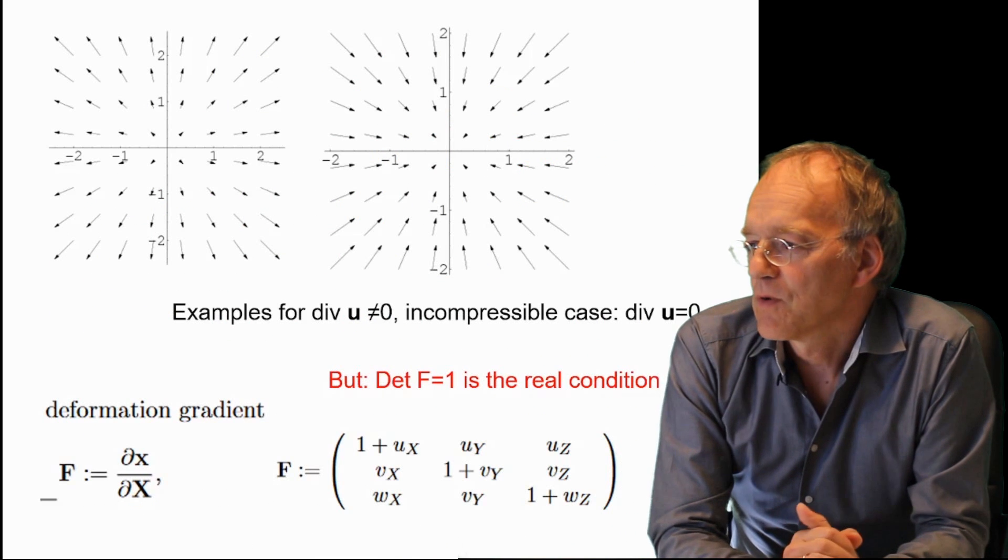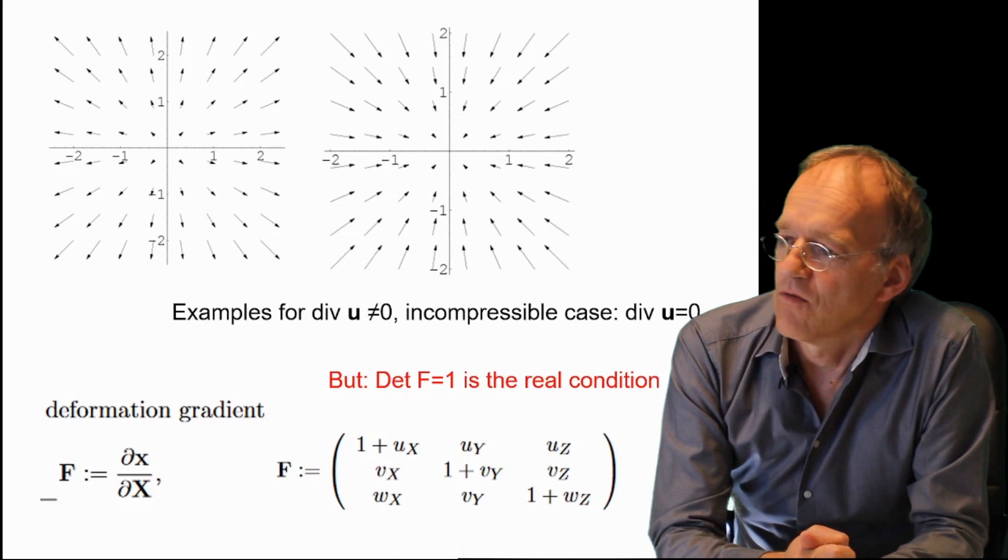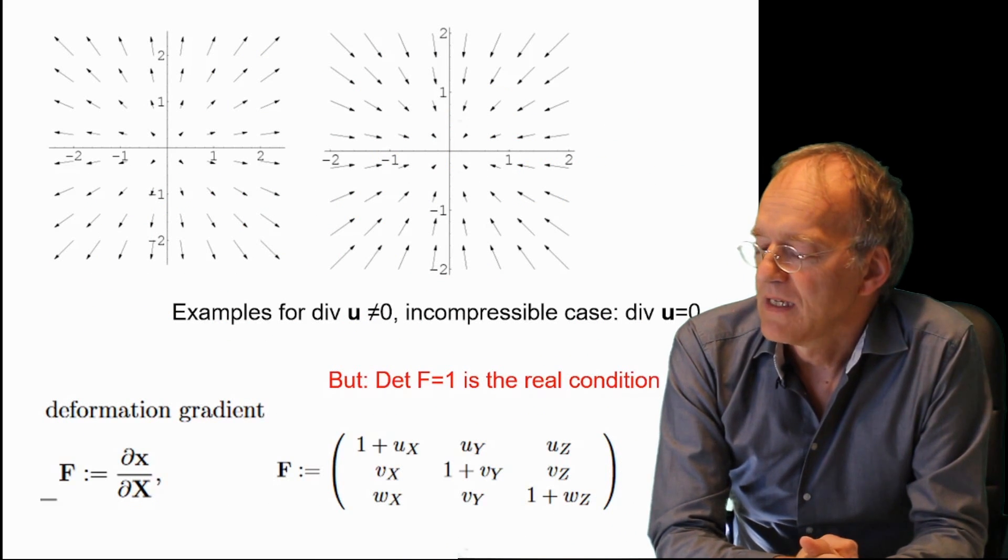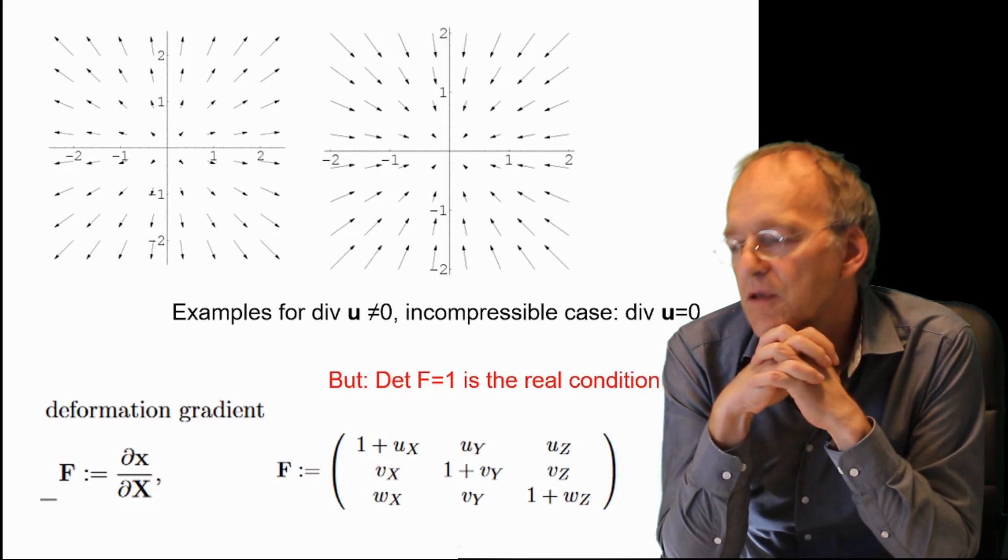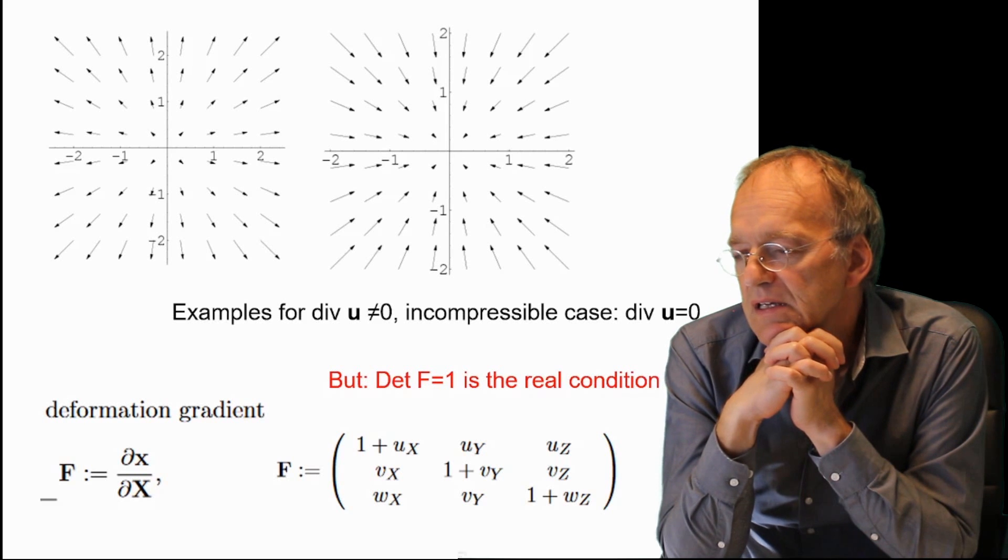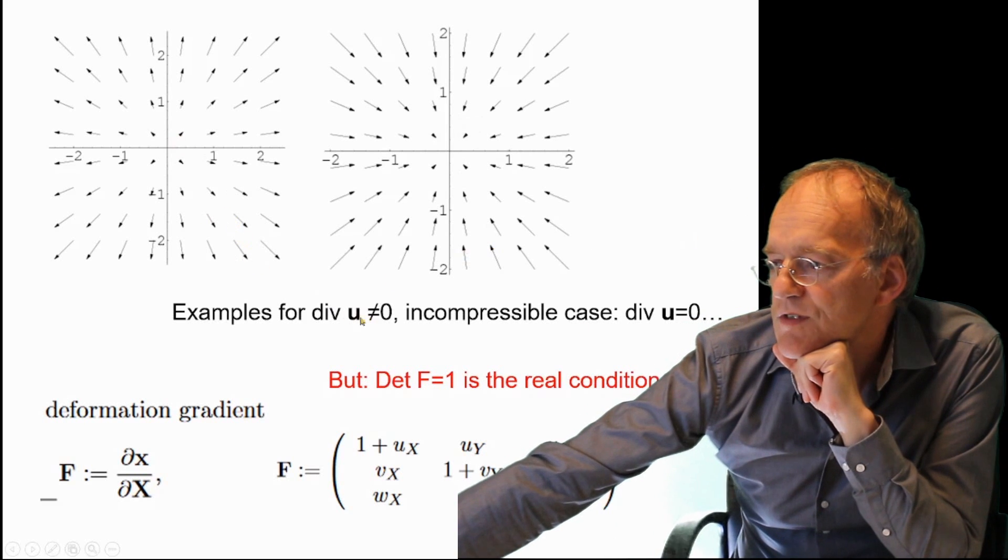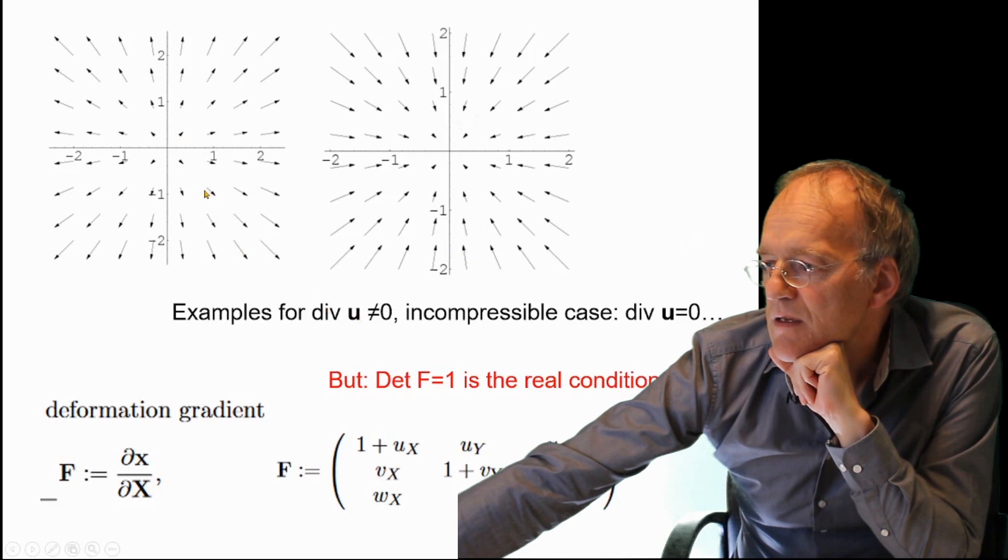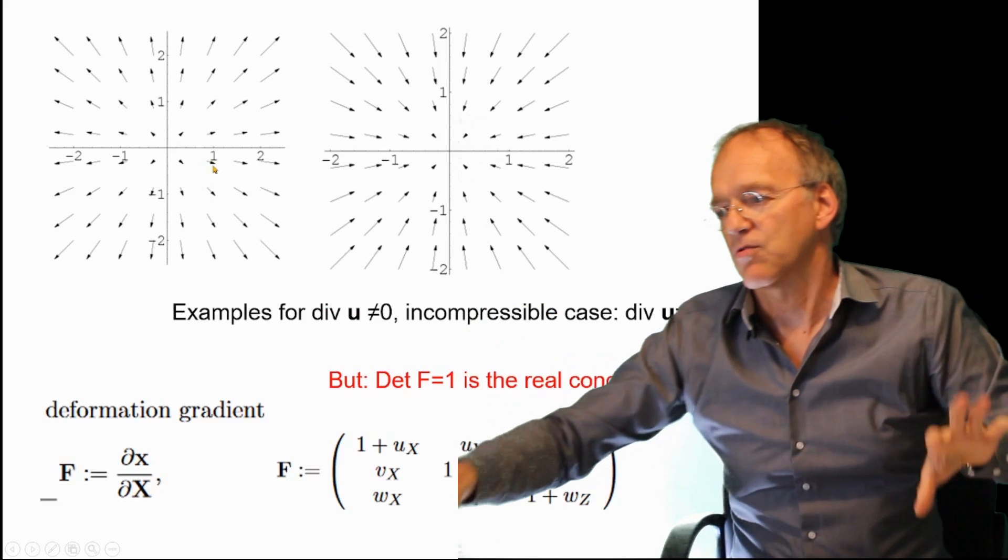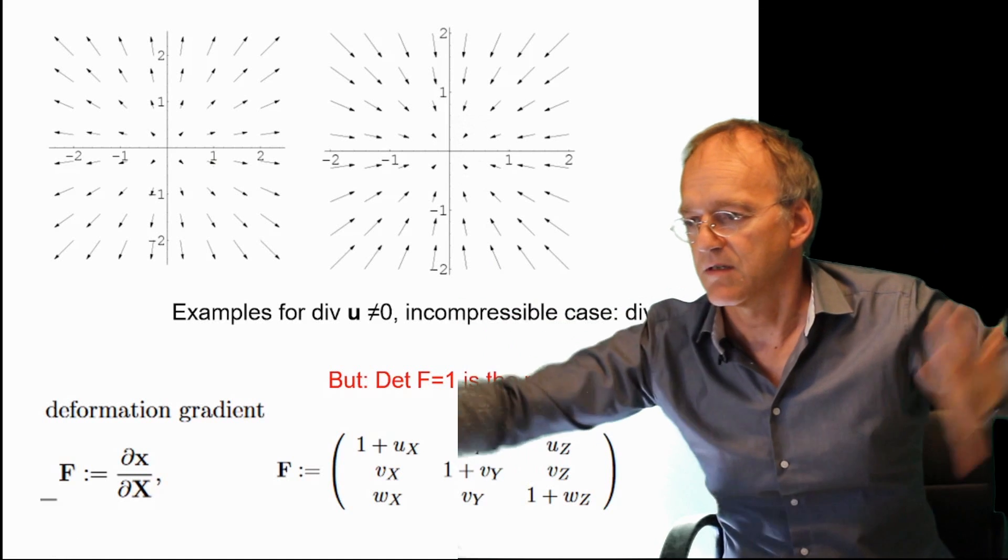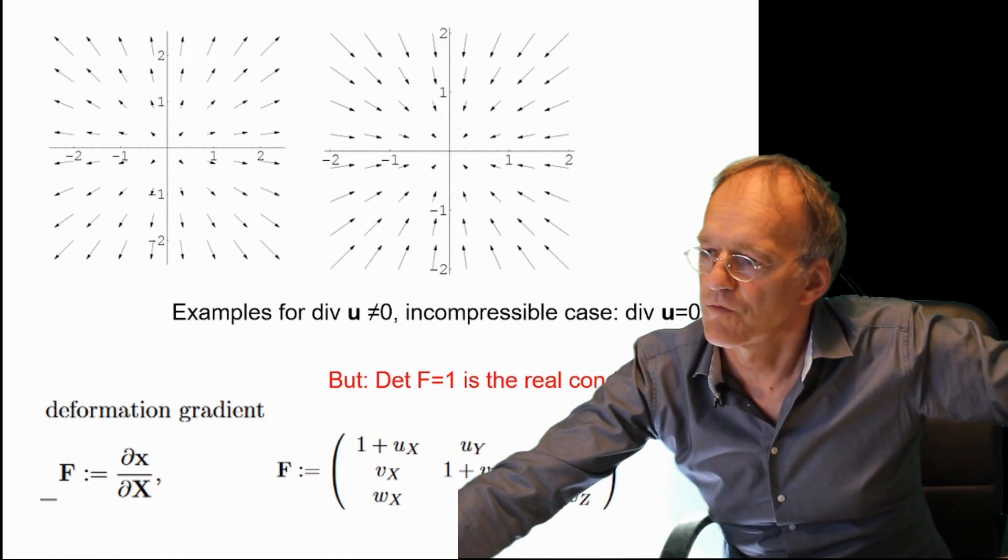Now, what's the problem with this theory? It has a couple of shortcomings. And one thing is, if you look closer at this vector field, then you really realize that it's a linear theory.